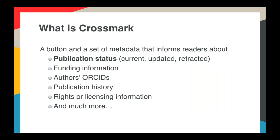The Crossmark service is essentially these things: it's a button that publishers place on their website, it's a pop-up box that comes when you press on that button, and it's a set of metadata that tells the reader if there have been any updates to a piece of content. It also gives them information such as funding information, authors' ORCID IDs, the publication history, rights or license information, and much more.